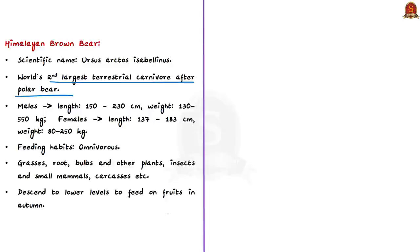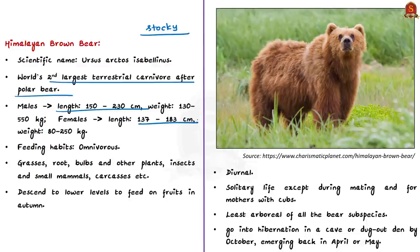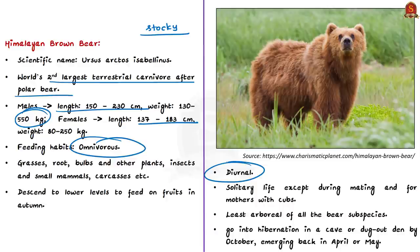The body coat is shorter in summer and longer in winter. The head is large, the body is heavy, and the legs are stocky — that is, broad and strongly built. Males are larger than females: males range from 150 to 250 centimeters in length compared to 137 to 183 centimeters for females. Male weights range from 130 to 550 kilograms and females from 80 to 250 kilograms. They are omnivorous and diurnal — active during the day — and have a solitary life except during mating.